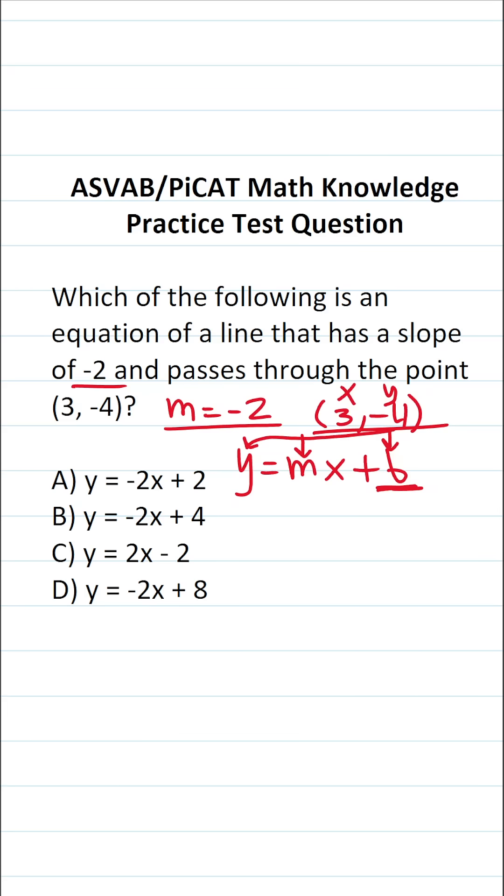I can plug in negative 4 for y, 3 for x, and negative 2 for m. And by solving for b, I'll know what my y-intercept is. So this becomes negative 4 equals negative 2 times 3 plus b.